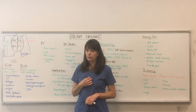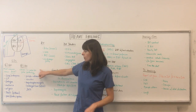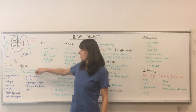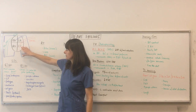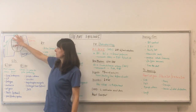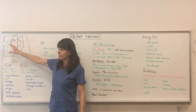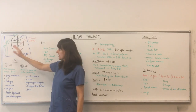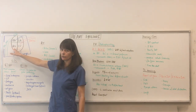Now for right-sided heart failure, it is usually most commonly caused by left-sided heart failure. So there's something going on with the left ventricle, the fluid backs up into the lungs, and eventually it'll get so bad that the lungs get so congested and then fluid is backing up all the way to the right ventricle.